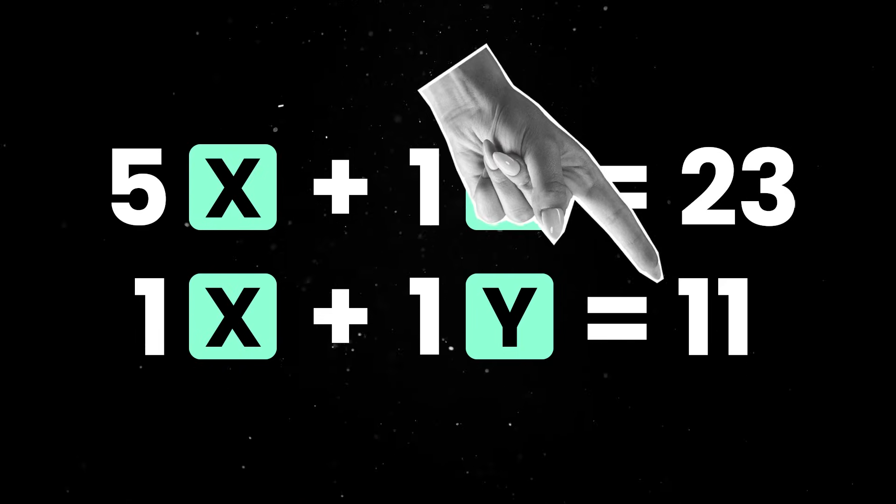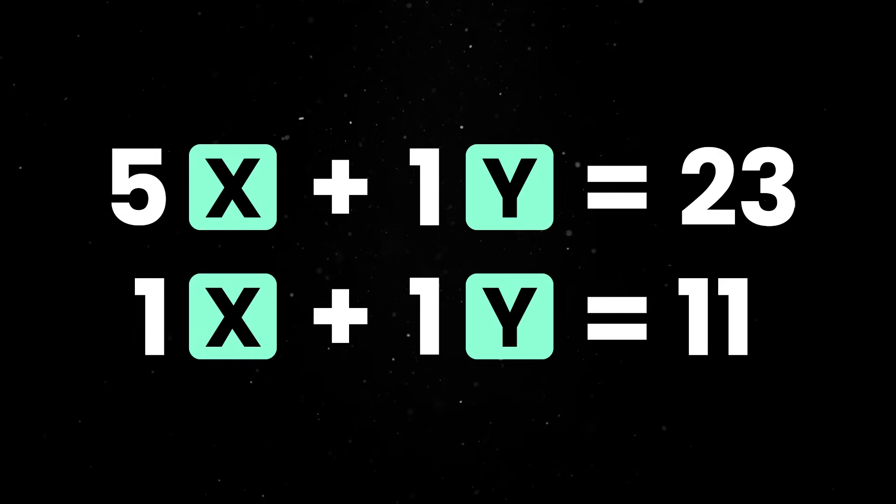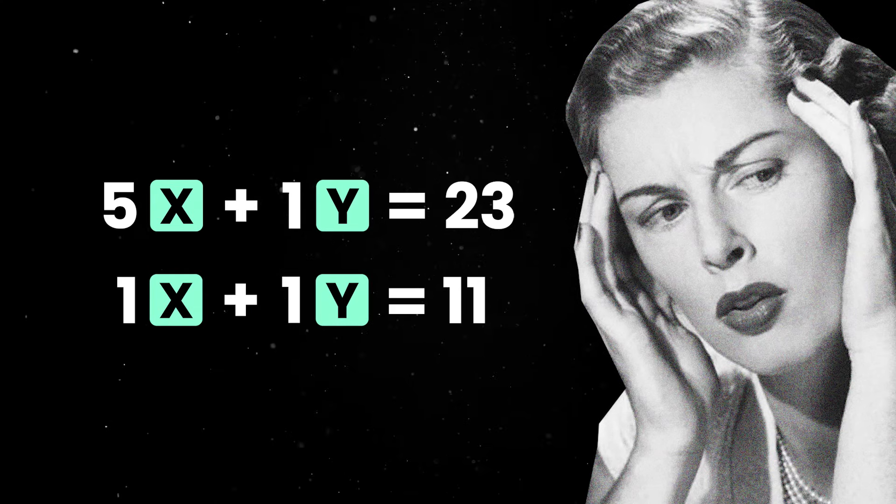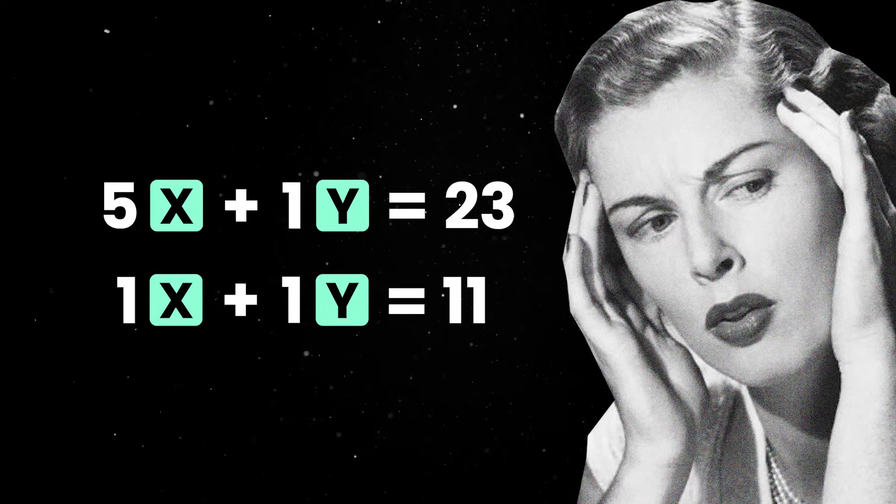Suddenly, you're not just solving for how to make 23 cents, you also have to make sure the nickels and pennies together add up to 11 coins. This is where things stop being simple arithmetic and start dipping into real linear algebra territory.